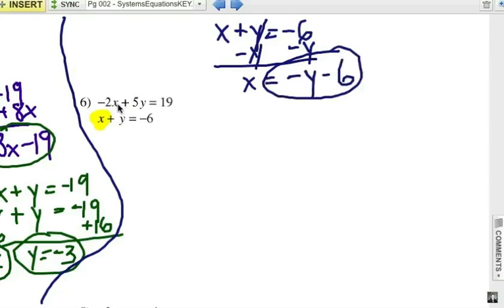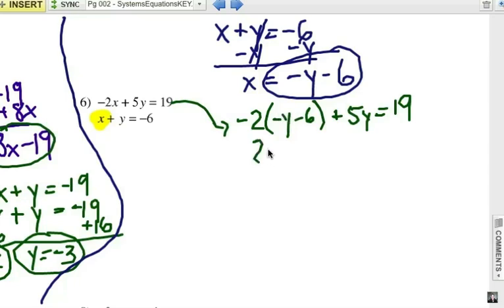So in the first equation, instead of x, I can substitute in that expression. I have to be careful about these negative signs now. Negative 2 times x. But x is negative y minus 6. I'm substituting it in there. And then it says plus 5y. And that equals 19 from the first equation. Multiply with the distributive property. That would be positive 2y plus 12 plus 5y equals 19.